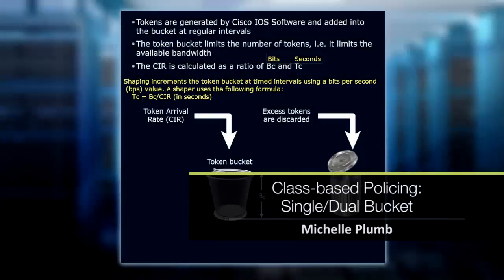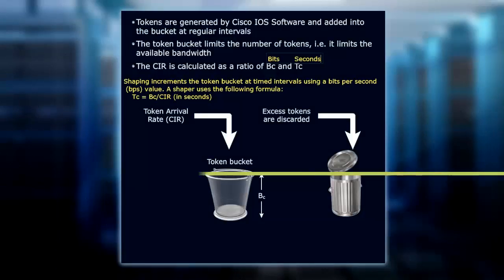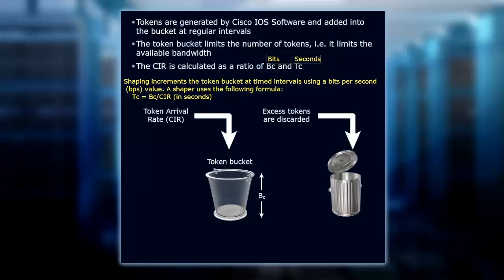We're focused on class-based policing with a single token bucket. In policing, the tokens are generated by our software and added into the bucket — a token bucket that collects these tokens. The token bucket limits the number of tokens to the available bandwidth. The committed information rate is calculated as a ratio of B sub C, which is the bits, and T sub C, the seconds — so bits per second.